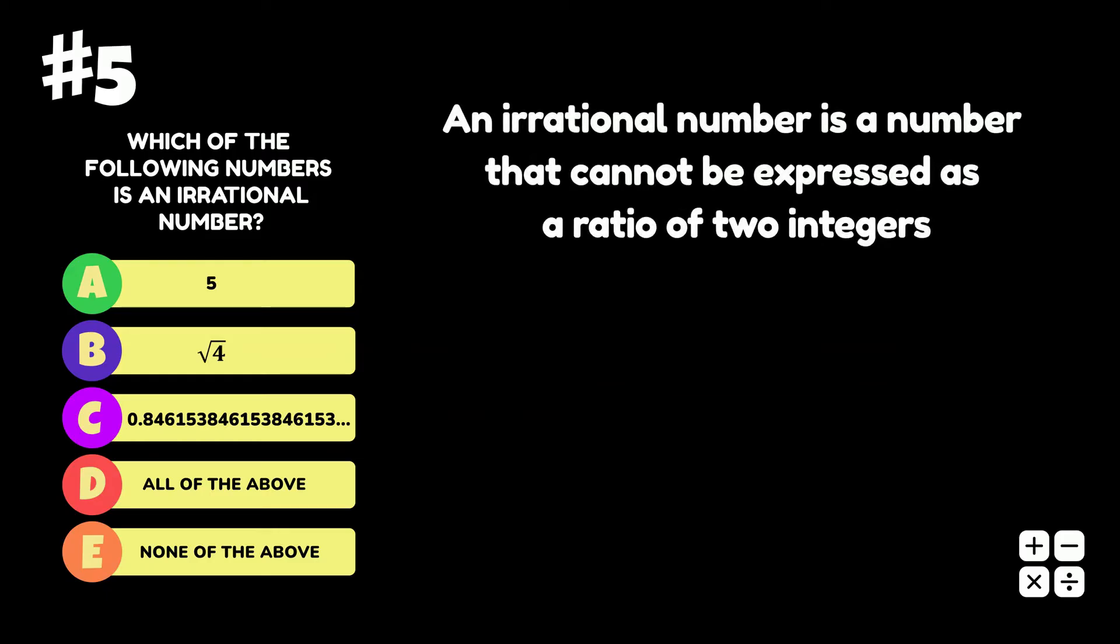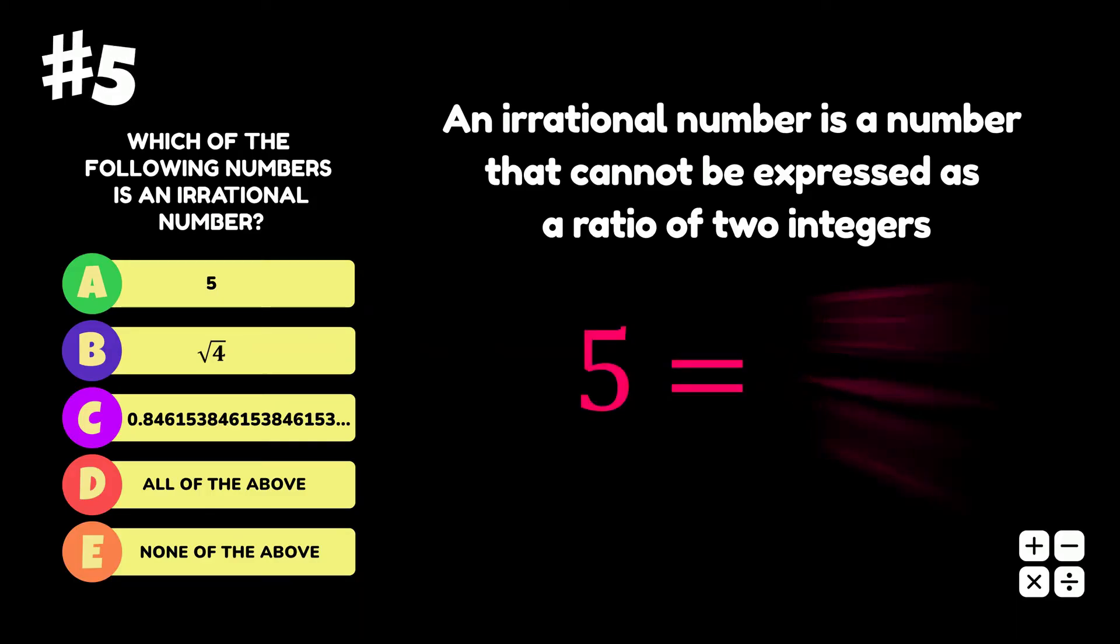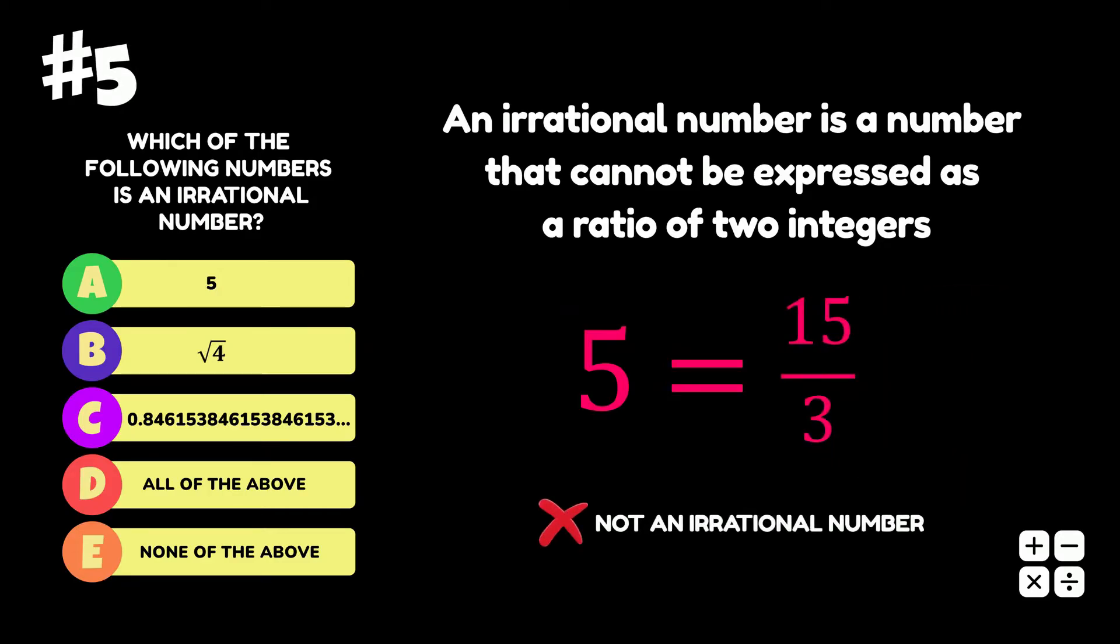An irrational number is a number that cannot be expressed as a ratio of two integers. The number 5 can be expressed as a ratio of two integers, as these examples show, and so it is not an irrational number. Therefore, we can disregard options A and D.